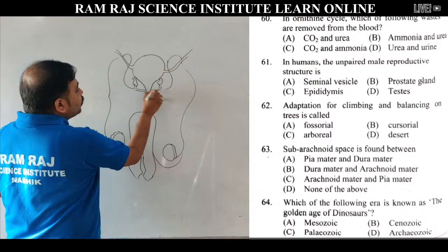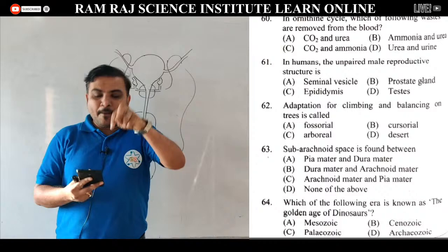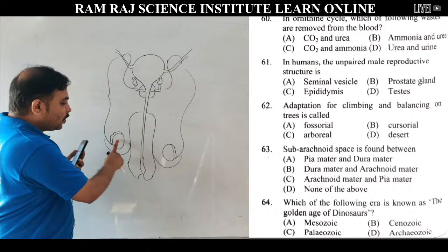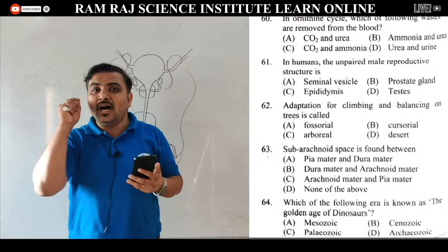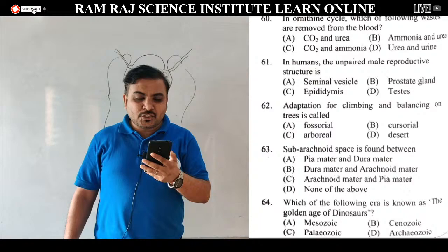Ejaculatory duct urethra के अंदर open होता है, और यहाँ पे मिलती है prostate gland. यह prostate gland single है — एक ही होती है. Epididymis भी paired है, testis भी two हैं, so these are also paired structures. आपको unpaired structure पूछा है, तो answer है prostate gland. This is the right answer for question number 61.